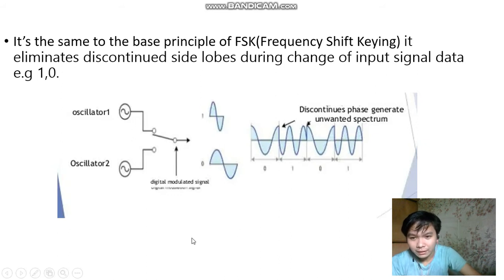You can see here the oscillator 1 and oscillator 2, or binary 1 and binary 0. Oscillator 1 is a high frequency and oscillator 2 is a low frequency. When oscillator 1 is on, this will be displayed. If you turn on, then you can see the change in phase. This would be the 0, this would be the 1. This continuous phase generates unwanted spectrum.